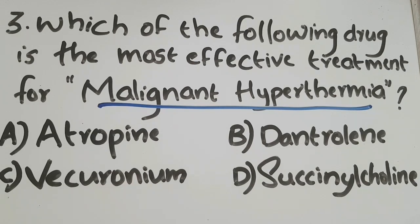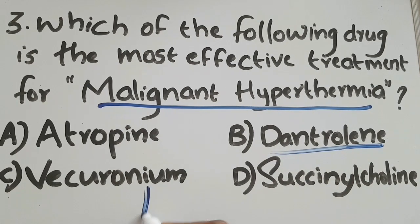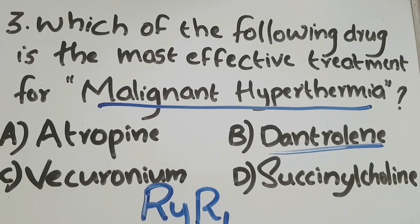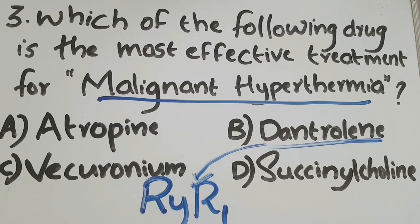The main treatment strategy is the use of dantrolene, along with supportive cooling methods. Dantrolene binds to ryanodine receptors present in the sarcoplasmic reticulum of the muscle cell and thereby prevents the release of calcium from the sarcoplasmic reticulum.